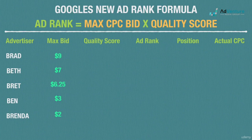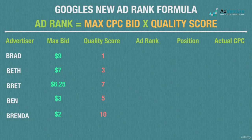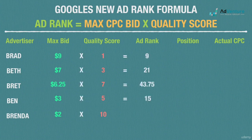Now let's make up some quality scores for these folks. Brad gets a quality score of 1, Beth lands a 3, Brett gets a perfectly respectable 7, Ben is mediocre with a 5, and Brenda hits the jackpot with a 10 quality score. Now let's calculate the respective ad ranks to determine their position. We get ad rank by simply multiplying the max bid by quality score. So Brad's ad rank is 9, Beth's is 21, Brett's ad rank is 43.75, Ben has an ad rank of 15, and Brenda's ad rank is 20.